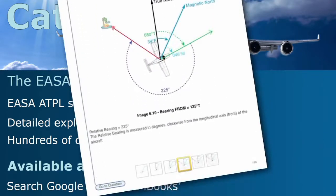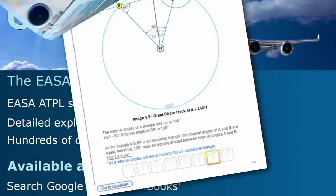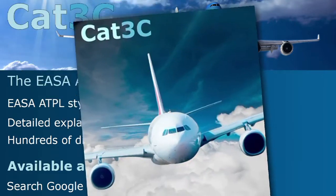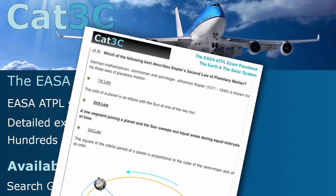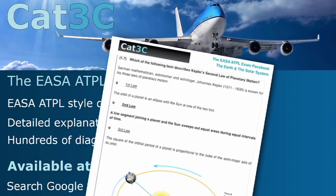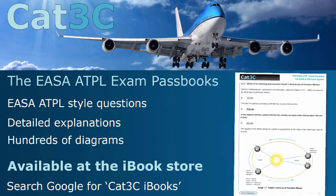The passbooks contain hundreds of exam-style questions and are supported by clear, in-depth explanations and interactive diagrams. The link to the iBooks can be found on the webpage below or at the Cat3C website at the Bookstore tab.